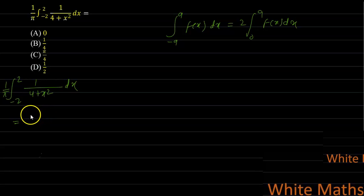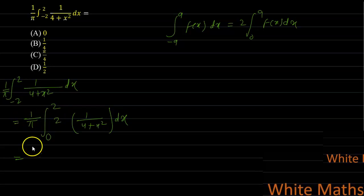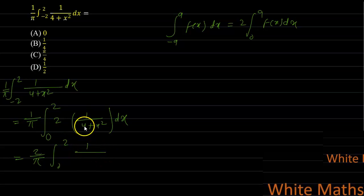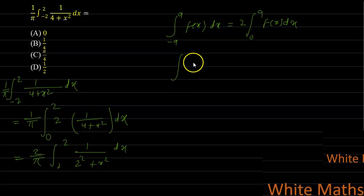Applying this property, the integral becomes (1/π) times 2 ∫₀² 1/(4+x²) dx. Taking 2 outside, we get (2/π) ∫₀² 1/(4+x²) dx. Now write 4 as 2² so the denominator becomes 2² + x².